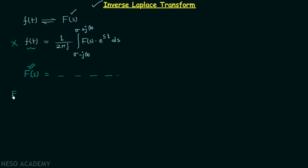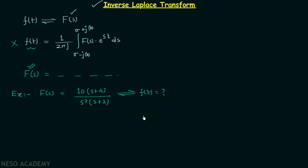To understand this, let's take one example. We are given the Laplace transform F(s) equal to 10 multiplied by (s + 4) in the numerator, and in the denominator we have s² multiplied by (s + 2). We are supposed to calculate the corresponding time domain signal f(t) without using the formula. By using partial fractions, we can write F(s) equal to A over s² plus B over s plus C over (s + 2).